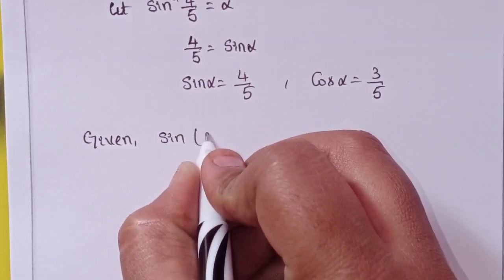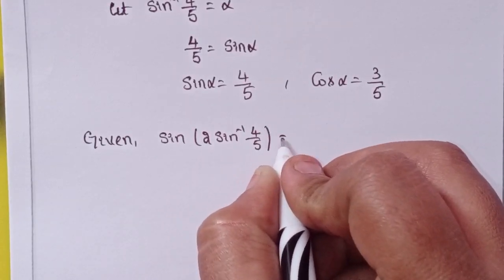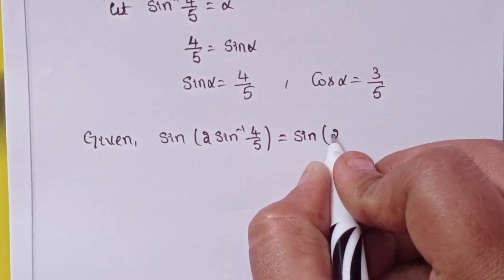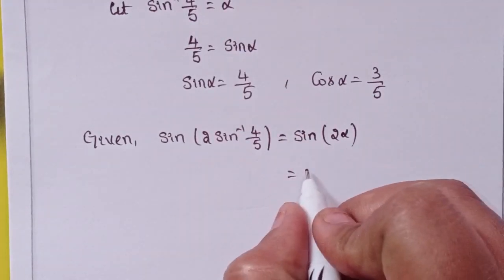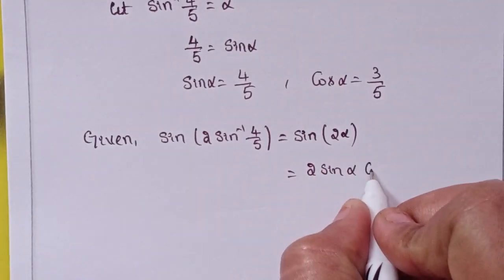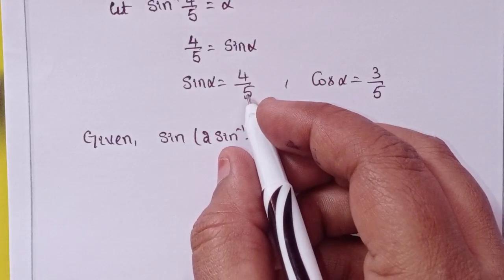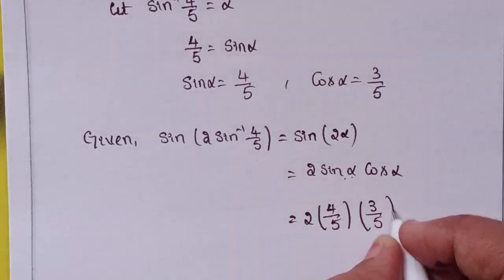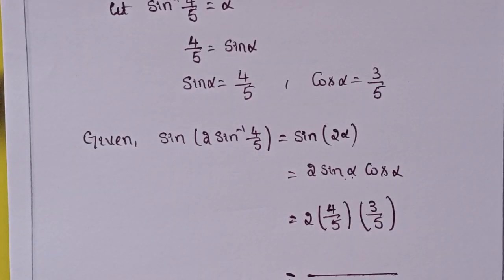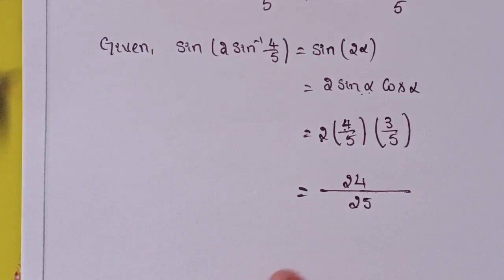Given: sin of 2 times sin inverse 4 by 5 equals sin of 2 alpha, which means sin 2 theta equals 2 sin theta cos theta. So 2 times sin alpha (which is 4 by 5) times cos alpha (which is 3 by 5). LCM is 25: 2 times 4 is 8, and 8 times 3 is 24. So 24 by 25 is the solution.